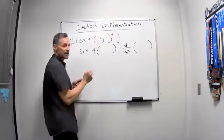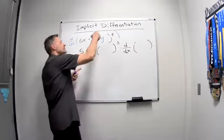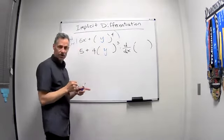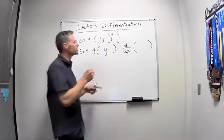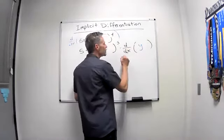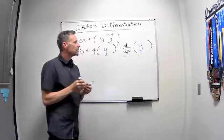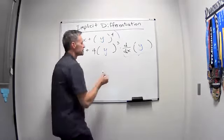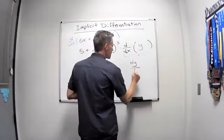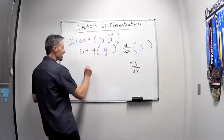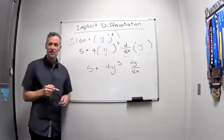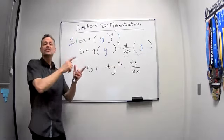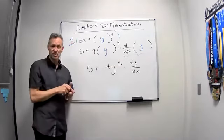So if this was just y to the fourth and I take the derivative, I would get 4y to the third, but times the derivative from the chain rule, times the derivative of this y. Well, this piece, we usually just write as dy/dx. So I've got 5 plus 4y cubed times dy/dx. And this shows you the key to implicit differentiation.